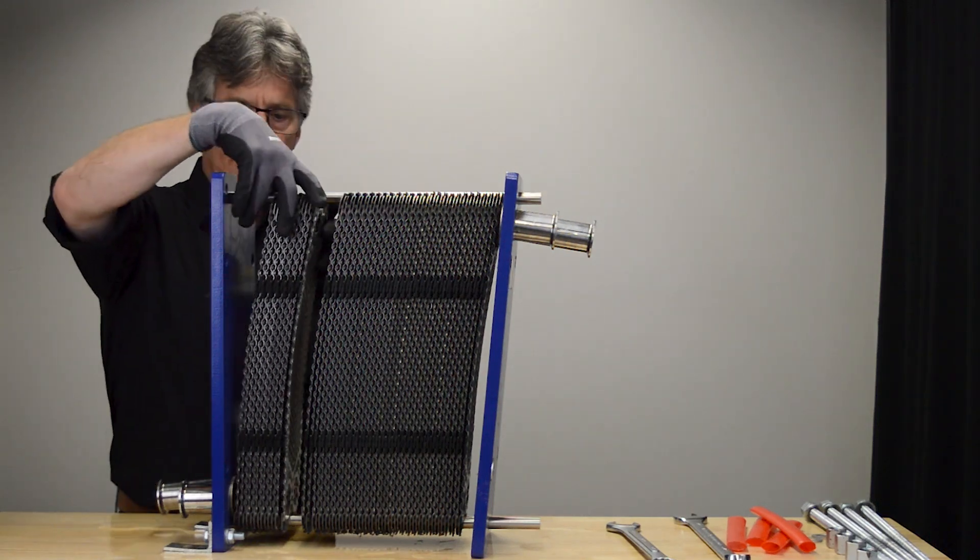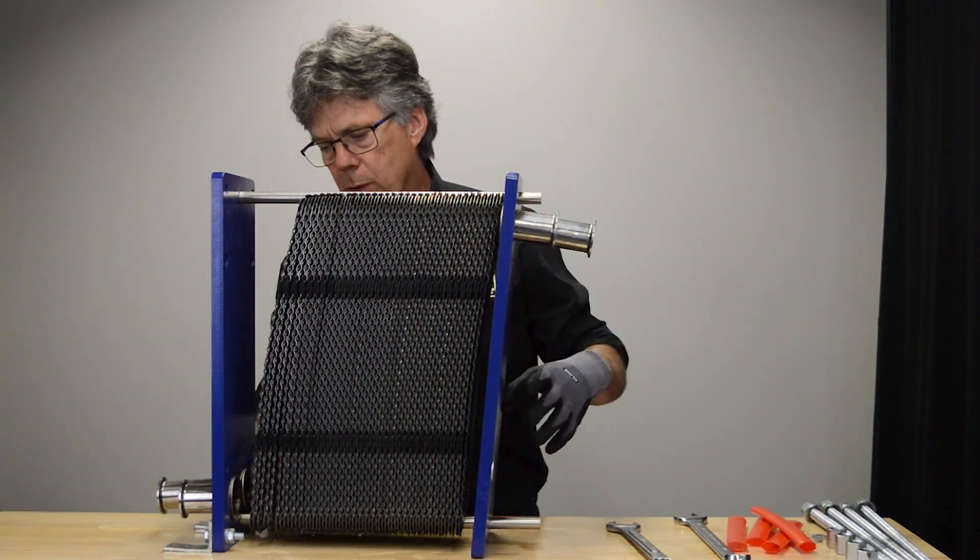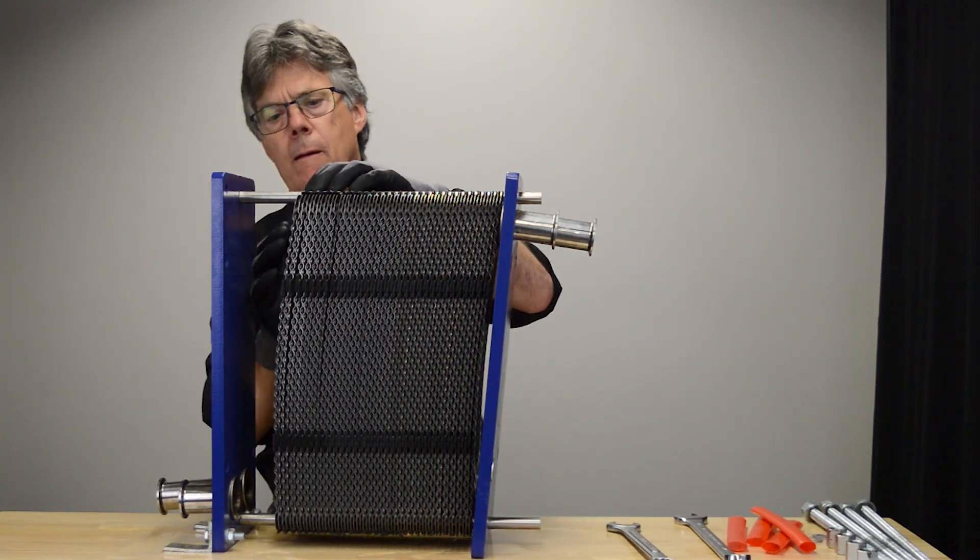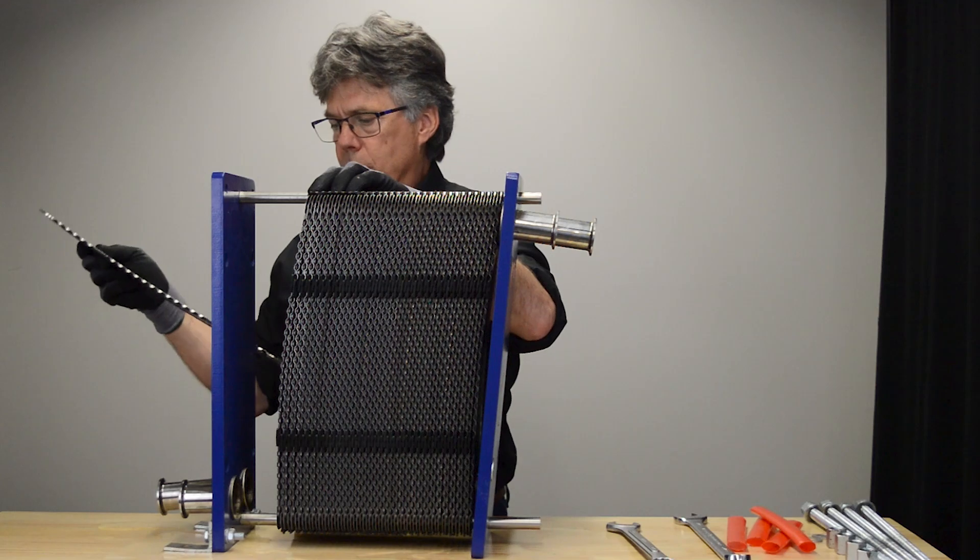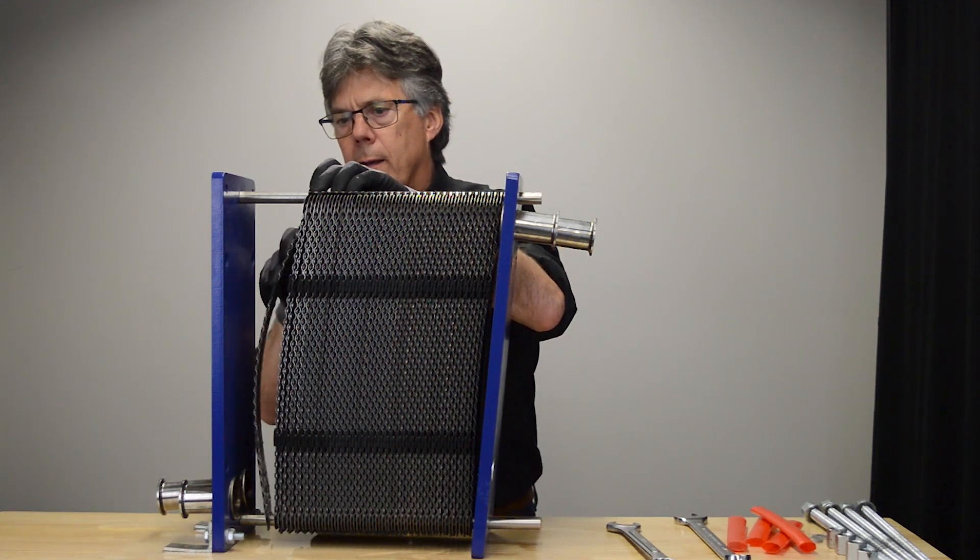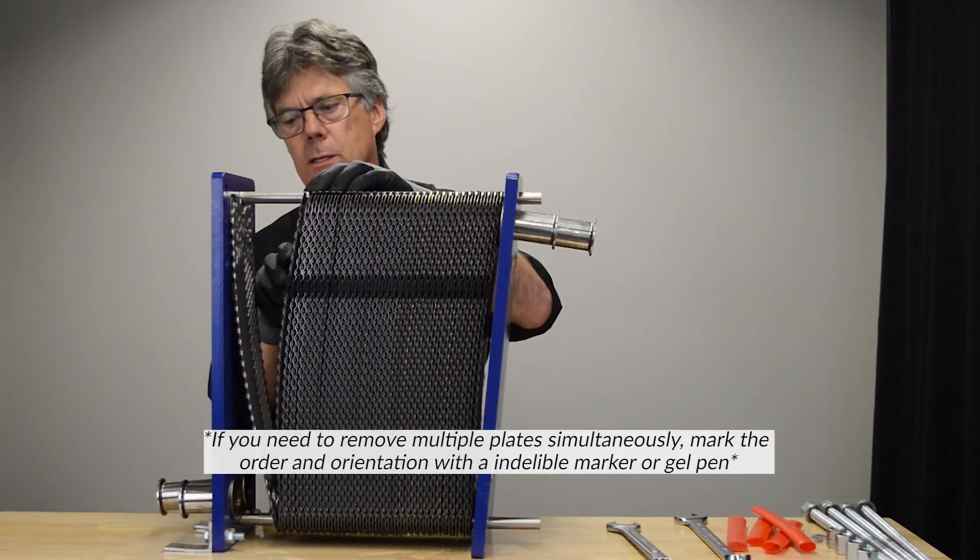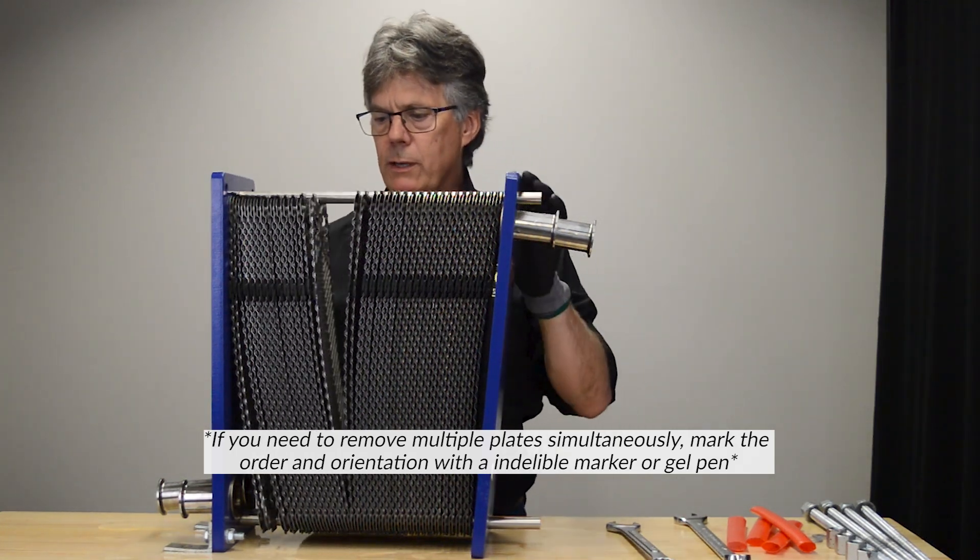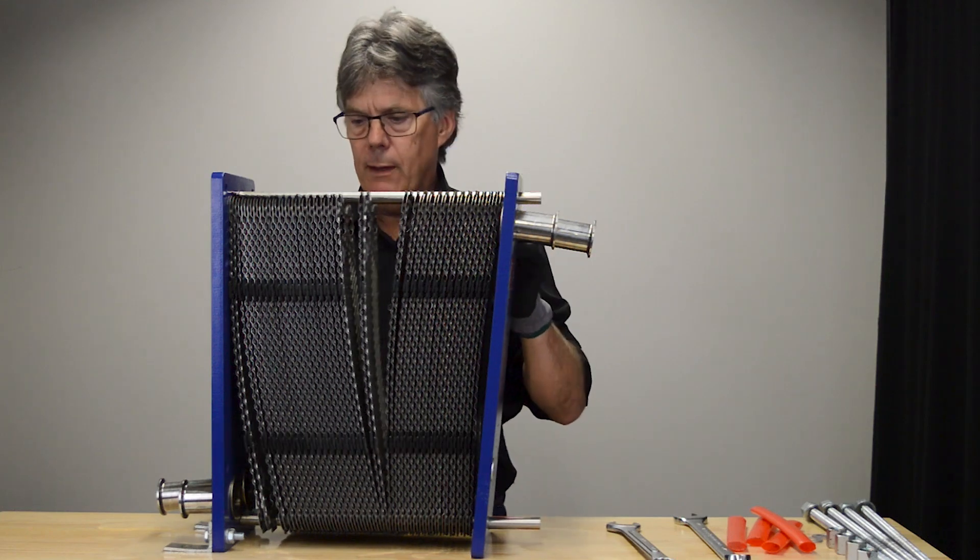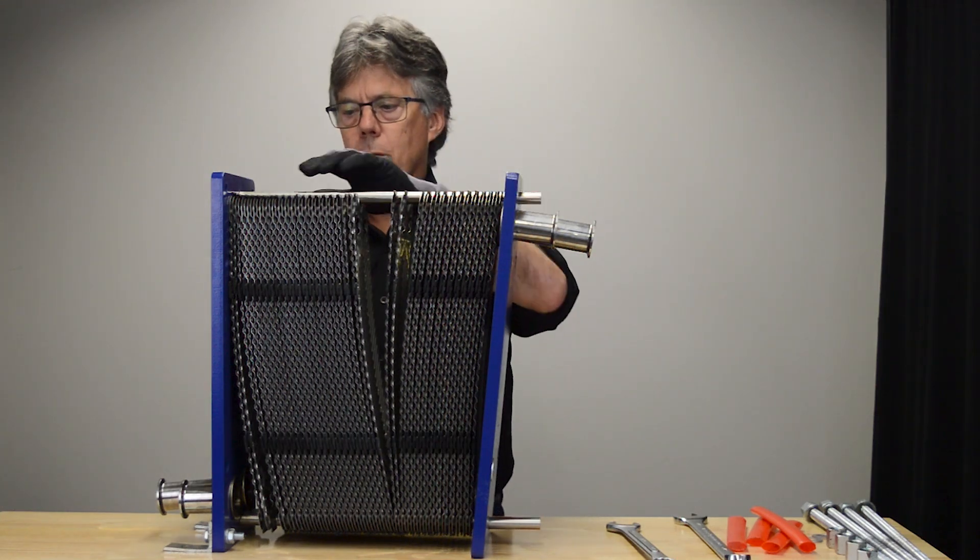So if we were changing the gasket or cleaning the heat exchanger, we'd start with this end, we'd take one plate out, we'd wash it, put it back in again, and then we'd do the next one and keep going through. If we take them all out and throw them all in the bathtub or the wash sink at the same time, then we're going to get them mixed up, and when we put them back together, it's not going to work.